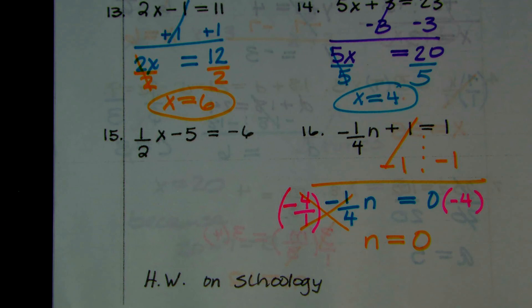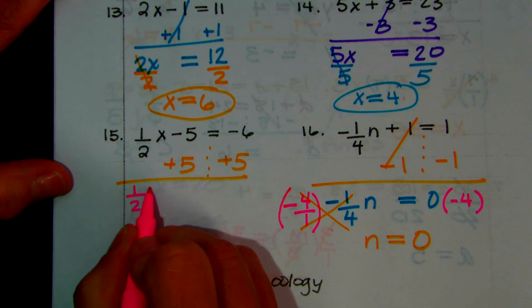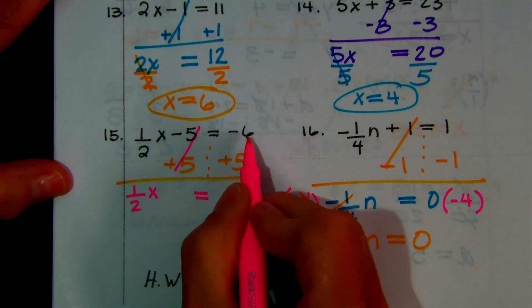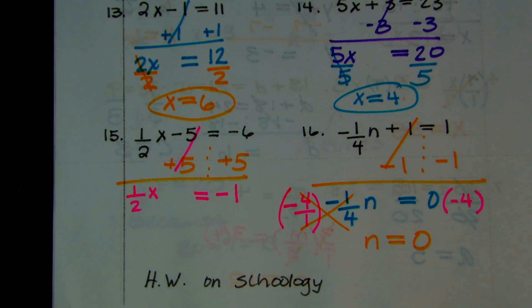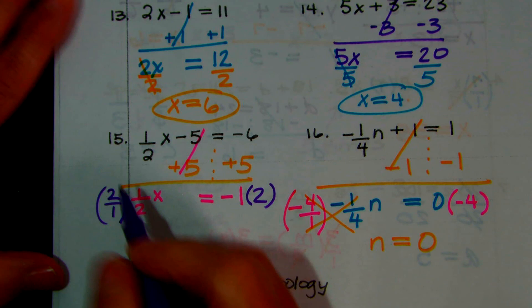Give 15 a try. You have 1/2 times x minus 5 equals negative 6. Start by adding 5 to both sides — the equal sign splits it. So you have 1/2 x, negative 5 plus 5 adds out, equal sign comes down, negative 6 plus 5 is negative 1. Now, to get rid of 1/2 times x, multiply by the reciprocal: 2 over 1. The 2's cancel, the 1's cancel, and you have 1x equals negative 1 times 2, which is negative 2. Your homework is on Schoology, not your book. Good luck — see you next lesson.